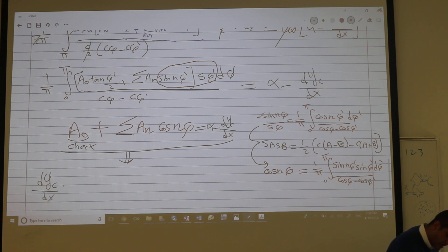I will rewrite that as the following. dy by dx is a function of x, this is your camber slope, it's a function of x so you can write it as a function of phi by the substitution that we have. This is equal to alpha minus a.